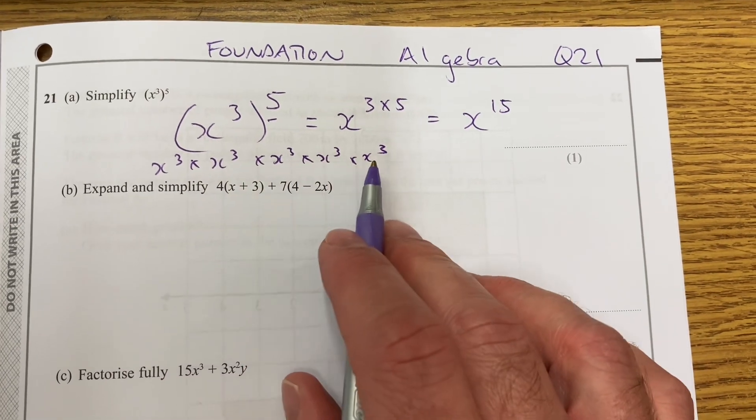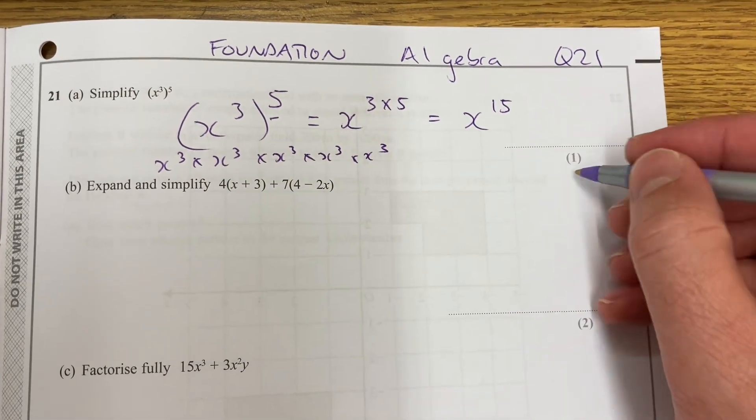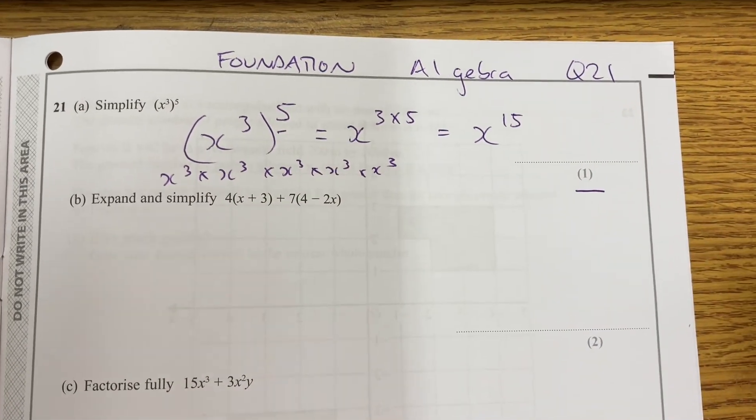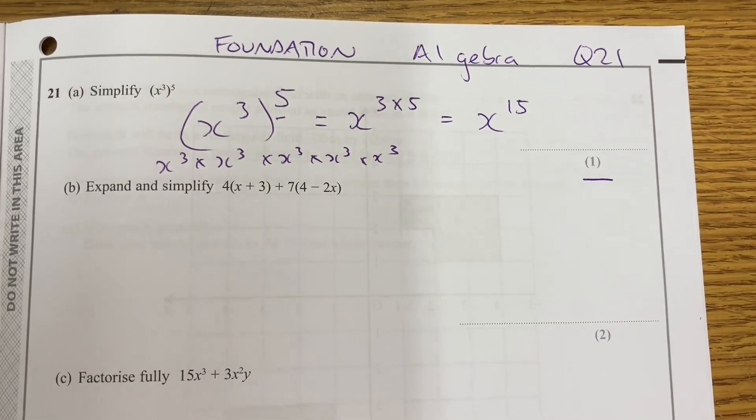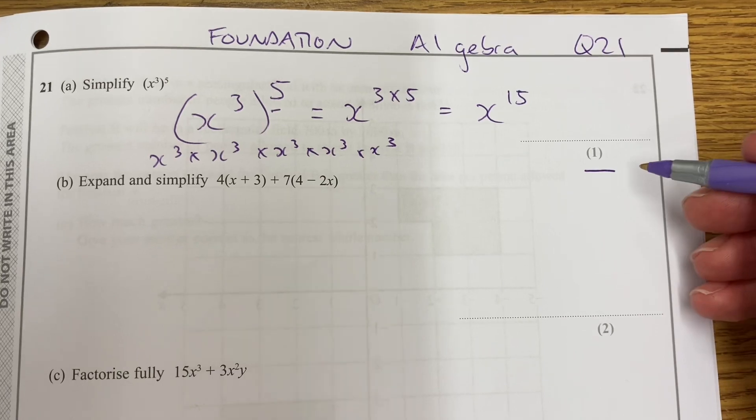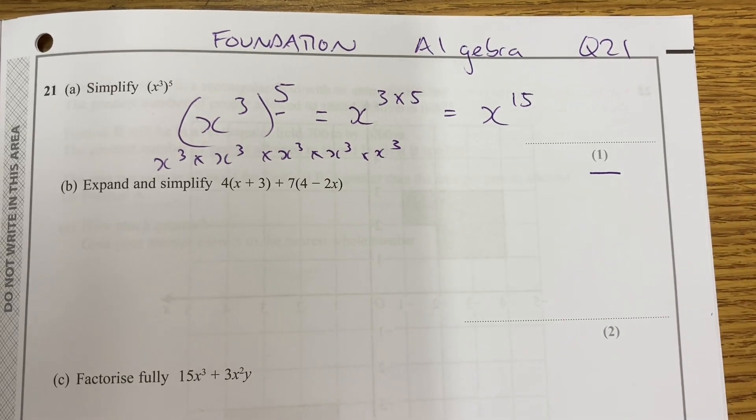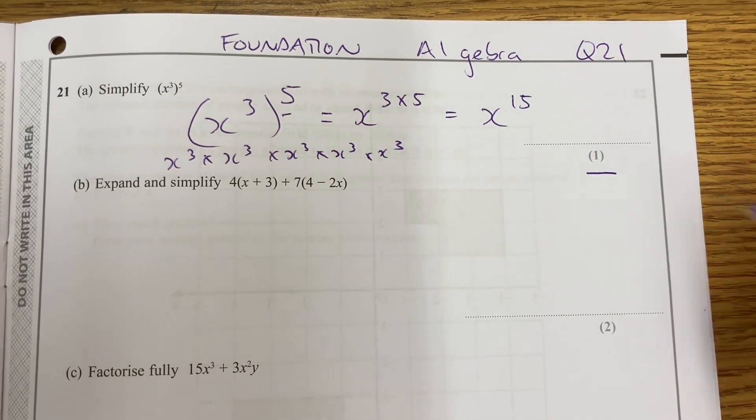Adding the exponents: 3, 6, 9, 12, 15. So that's one mark there. In an exam, try and go for a mark a minute.